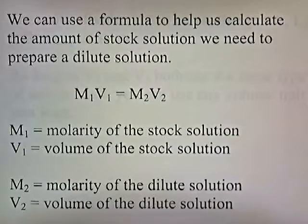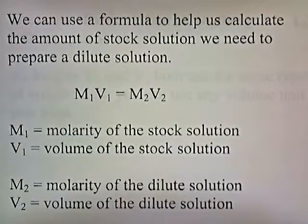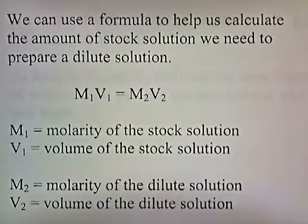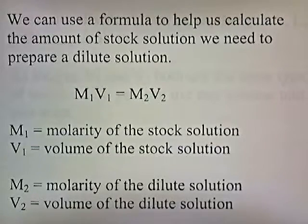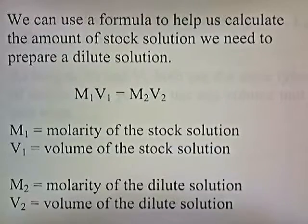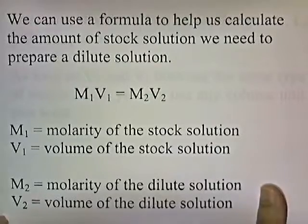We can use a formula to help us calculate the amount of stock solution we need to prepare a dilute solution: M1 V1 equals M2 V2. M1 is the molarity of the concentrated stock solution. V1 is the volume of the stock solution. M2 is the molarity of the dilute solution — that's the molarity after you've added water. And V2 is the volume of the dilute solution — the new volume after you've added water to dilute the concentrated solution.